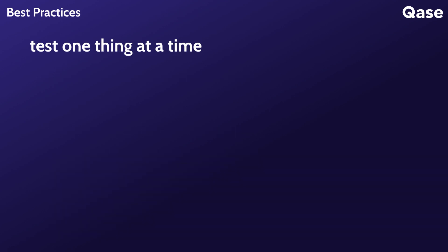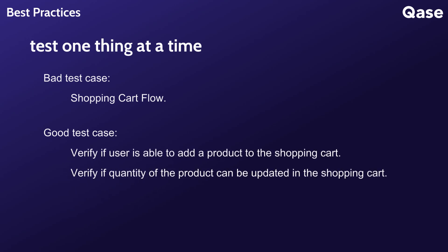Test one thing at a time. Each test case should focus on testing a specific functionality or scenario, making it easy to identify the root cause of issues when they arise. Ensure test cases remain clear, easy to execute, and directly aligned with a particular aspect of the system. For instance, instead of 'shopping cart flow,' you could say 'adding a product to the shopping cart' or 'updating quantity in the shopping cart.'